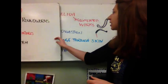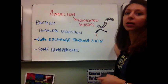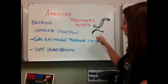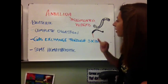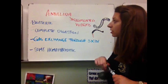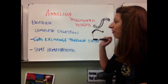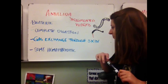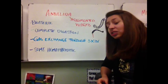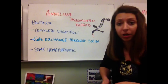Next on the list are our Annelids or Annelida — these are our segmented worms. These include earthworms and leeches. They have bilateral symmetry and complete digestion as well. They have gas exchange generally through the skin, and some can be hermaphroditic, though they also have sexual reproduction.